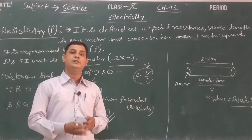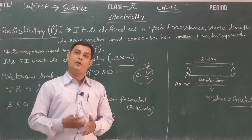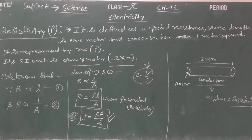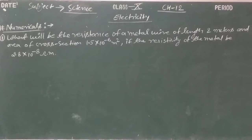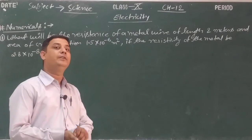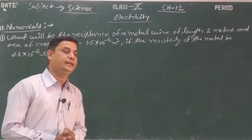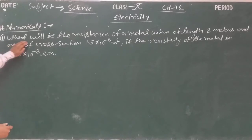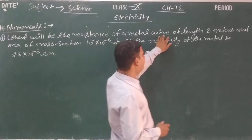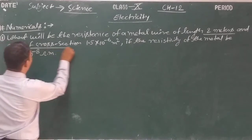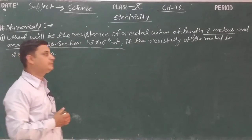Now we are going to solve some numericals based on resistance and resistivity from our NCERT book and reference books. The first numerical is based on resistance using the formula in the form of resistivity. The language of the numerical is: what will be the resistance of a metal wire of length 2 meters, area of cross-section 1.5 × 10⁻⁶ m², if the resistivity of the metal is 2.8 × 10⁻⁸ ohm·meter?